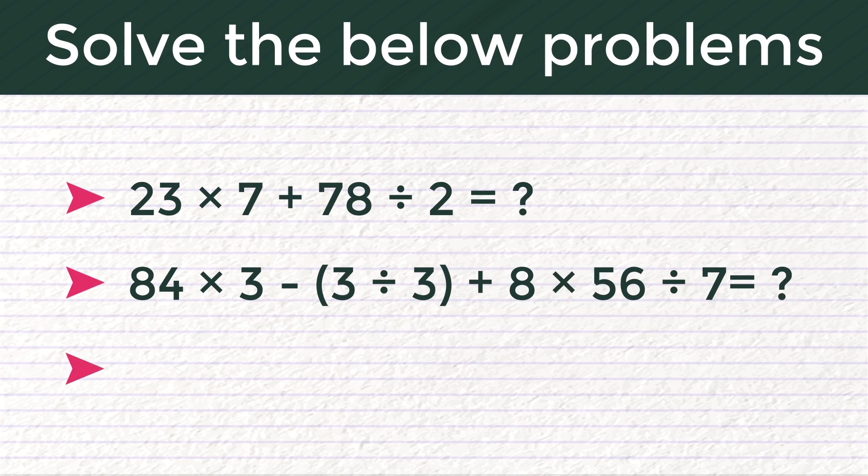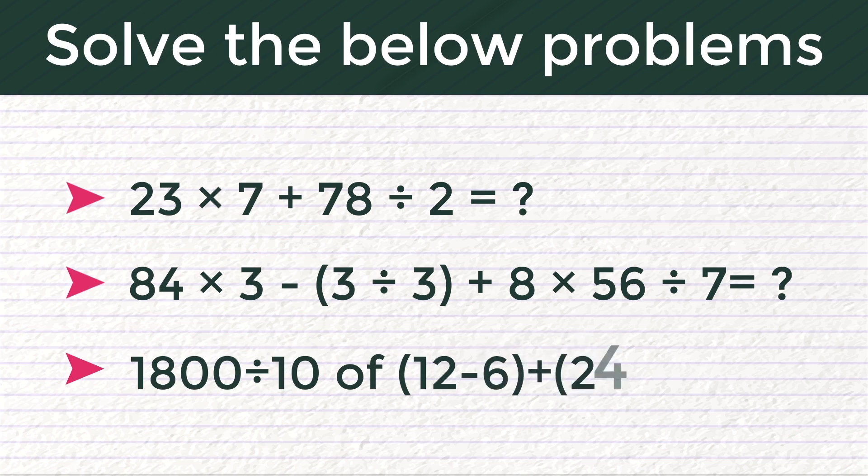Number 3: 1800 ÷ 10 of (12 - 6) + (24 - 12).